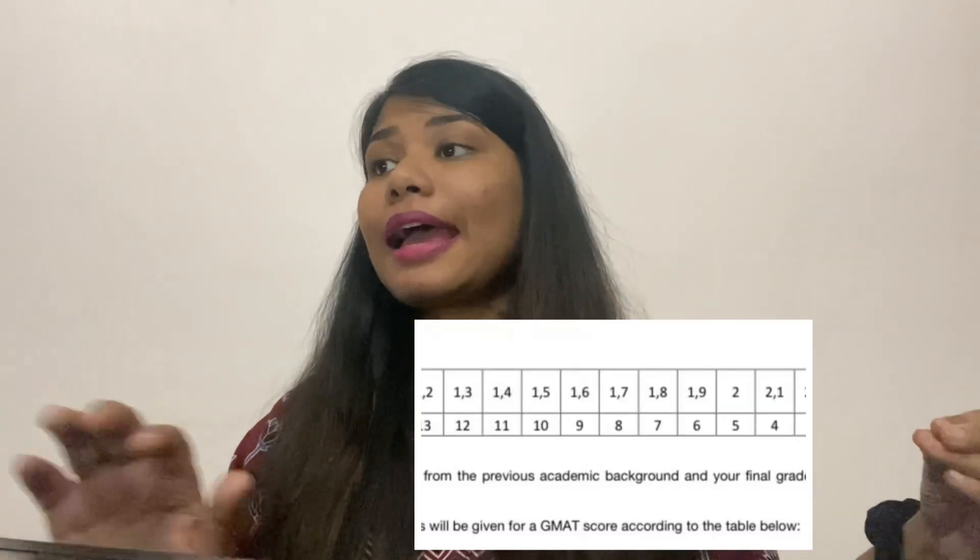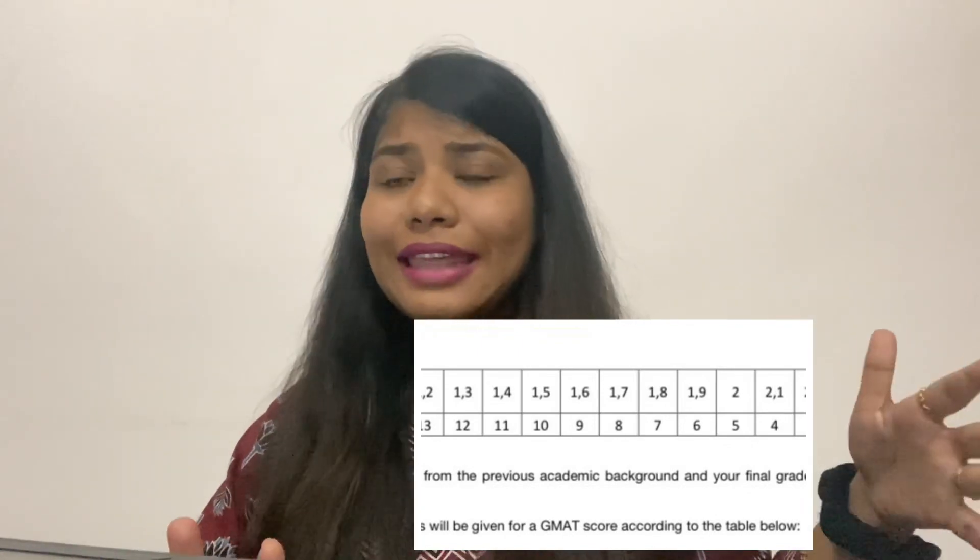Let me show you how marks are given based on your GPA and GMAT score. From the screenshot: if your German grade is 1 — equivalent to roughly 10 CGPA — you get the full 15 points; grade 1.1 gives 14 points; 1.2 gives 13 points, and so on. For GMAT: scoring 640 gives 0 bonus points; 650 gives 1 point; 660 gives 2; 670 gives 3; scoring 710 gives the full 10 points. This confirms that for students from China, Bangladesh, India, and Egypt, a GMAT is mandatory.